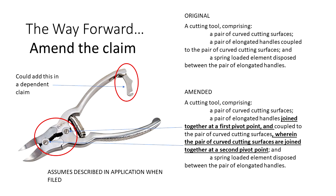The takeaway here is: describe all the features of your invention in sufficient detail so claims can be amended as needed in the future. It is impossible to know what the patent office is going to find, so one can never be 100% sure how claims are going to be amended. The best anyone can do is include sufficient detail in the applications when filing them so that the claims can be amended in the future if needed to get beyond rejections based on cited prior art.